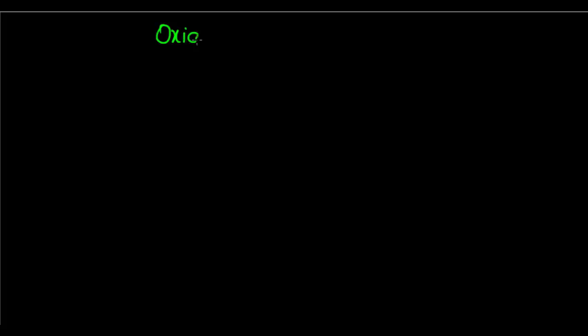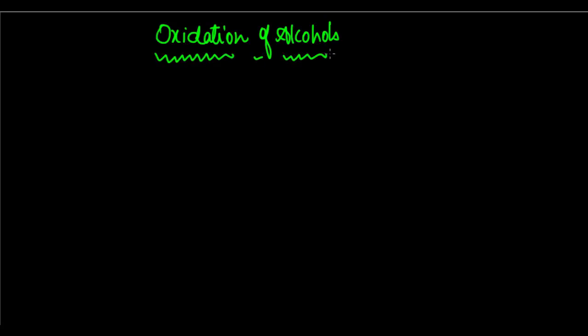Let's now have a look at the next chemical property or organic reaction which we're going to study, and that is oxidation of alcohols. As we've studied in the first chapter, oxidation is basically addition of oxygen or removal of hydrogen. When we add oxygen or when we remove hydrogen from a compound, we say that we're doing oxidation.